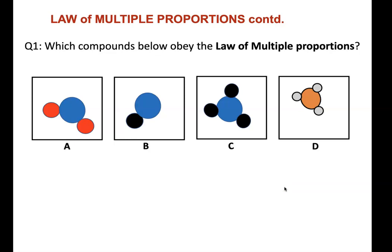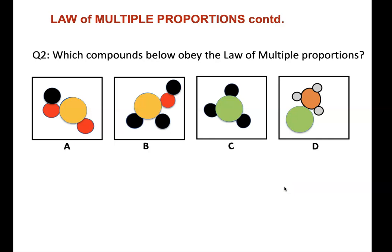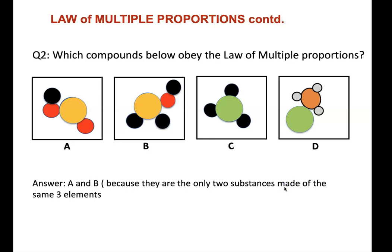Which compounds shown here obey the law of multiple proportions? It obviously has to be at least two compounds. The answer is B and C, because they are made out of the same types of atoms — the blue one and the black one. In another example, if you answered A and B, you are correct, because both are made with the same three elements: the black, yellow, and red elements.